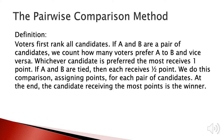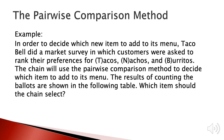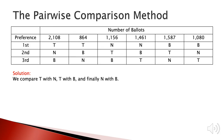For example, if we have candidates A, B, and C, we compare A and B, A and C, and B and C. Now let's see a concrete example: customers rank T, N, and B in a preference table, and we're going to use the pairwise comparison method to determine the winner. Because we have three candidates T, N, and B, we compare T and N, T and B, and N and B.